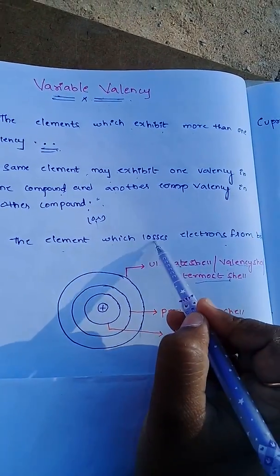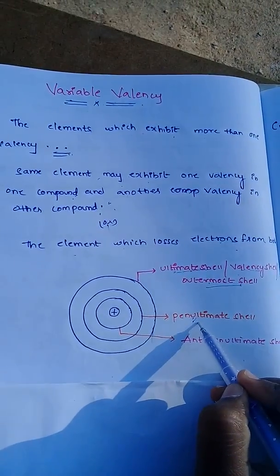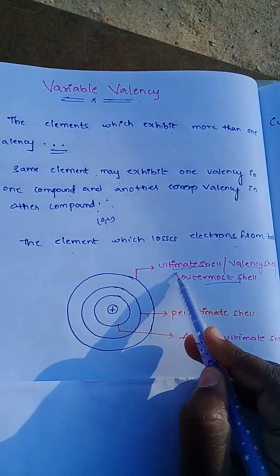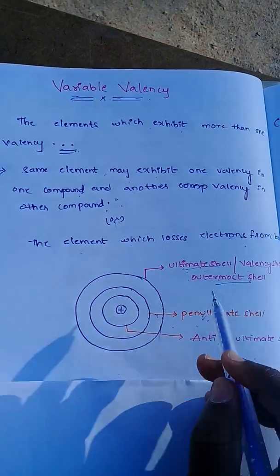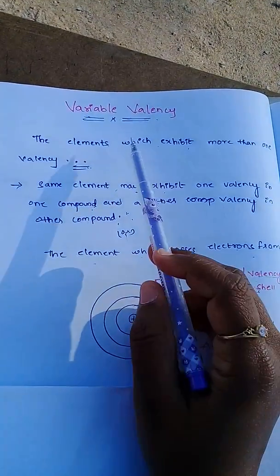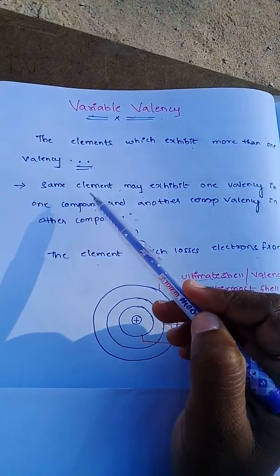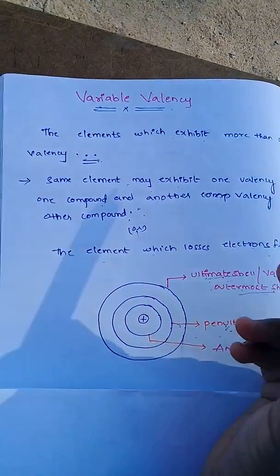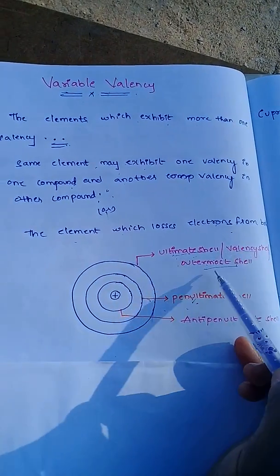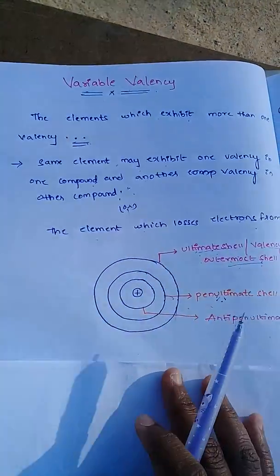The element which loses electrons from both the outermost shell and the penultimate shell shows variable valency. So there are three types of definitions: elements which exhibit more than one valency; same element exhibiting different valency in different compounds; and elements losing electrons from both outermost and penultimate shells.